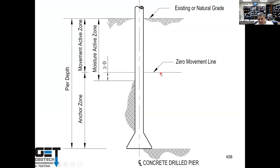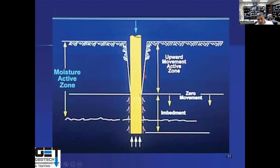Going back: there's the moisture active zone. The other thing we need to know is the movement active zone. Your moisture active zone could be 20 feet deep, but that soil is not going to move even if the moisture changes. You've got to know what your movement active zone is. In most areas in Houston, the movement active zone is about 10 feet deep — it equals what's called the zero movement line. The soils above the zero movement line move up and down; below it they don't.